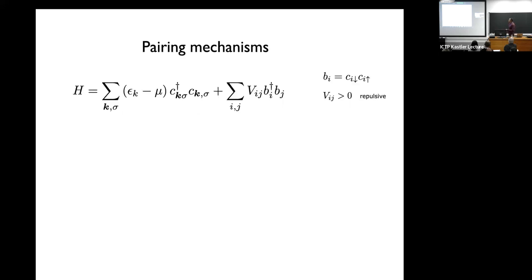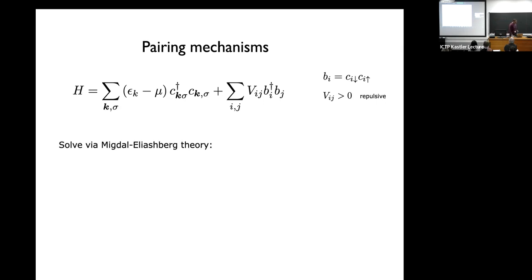What we study is a Fermi liquid with some dispersion and a BCS-like interaction. When this coupling is positive, it's a repulsive BCS interaction — I'm going to study repulsive interactions. We don't have a small parameter, so we solve using Migdal-Eliashberg theory, which does not require being pinned to weak coupling. Andre also studied repulsive interactions at weak coupling and found unconventional superconducting states that are uniform; what I'm going to do is go away from the weak coupling limit and look for non-uniform states.